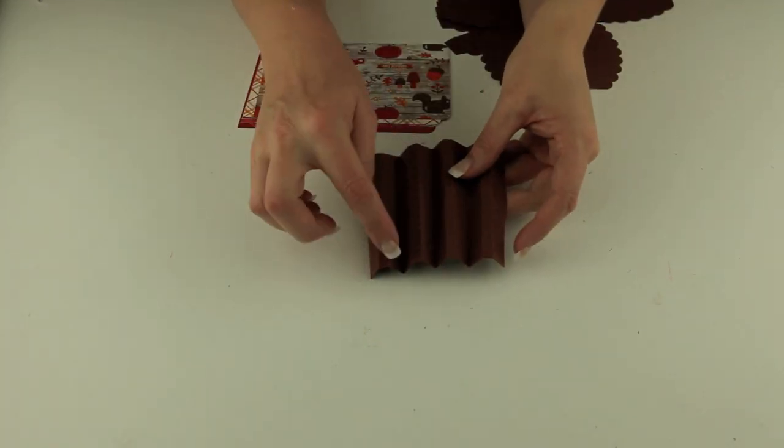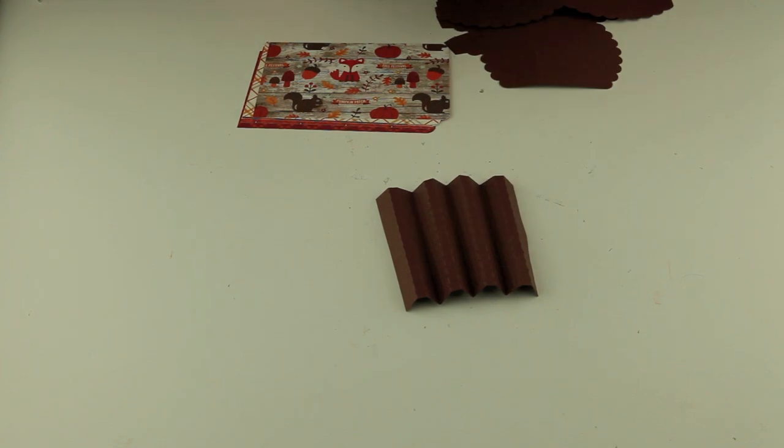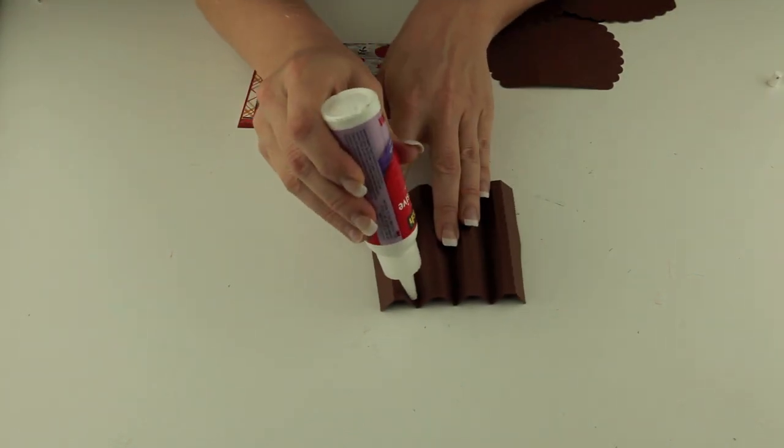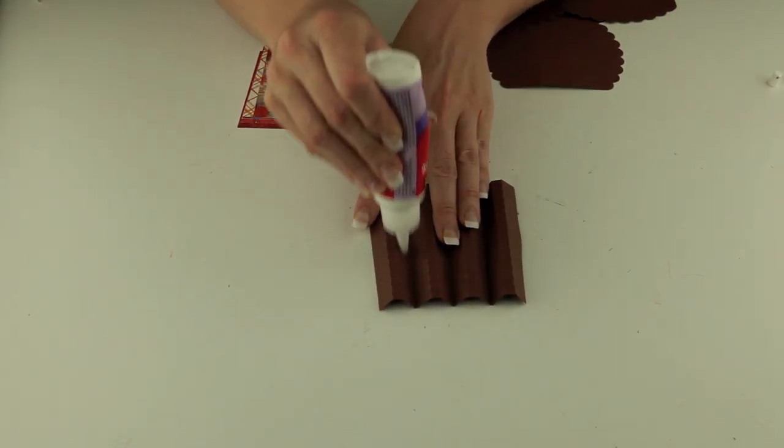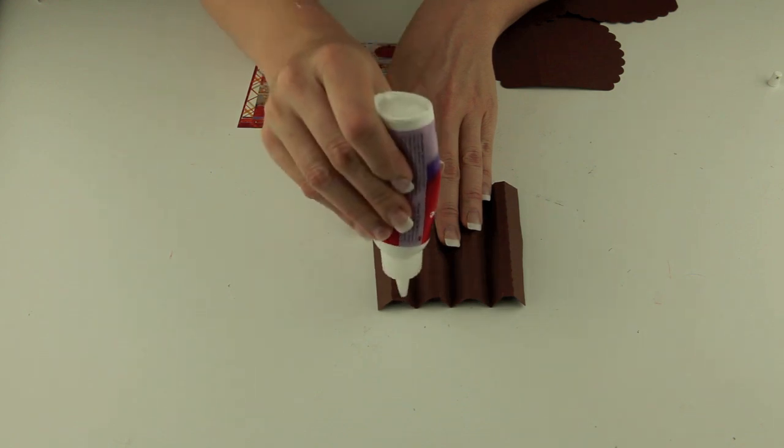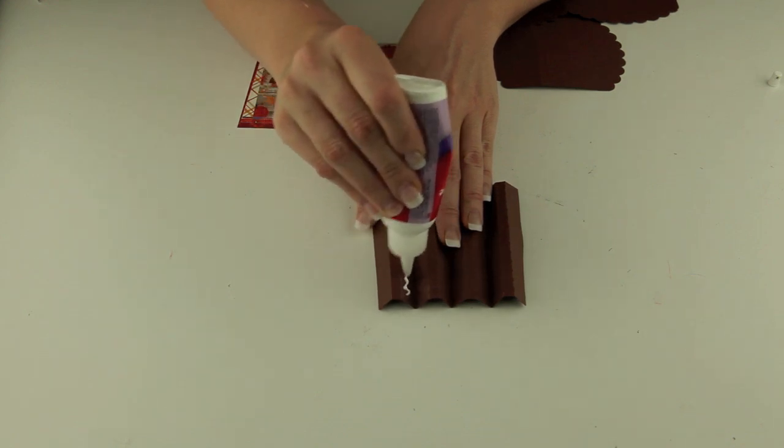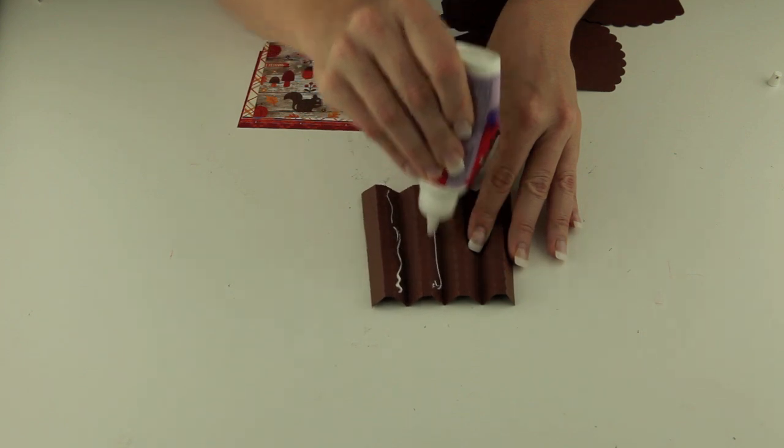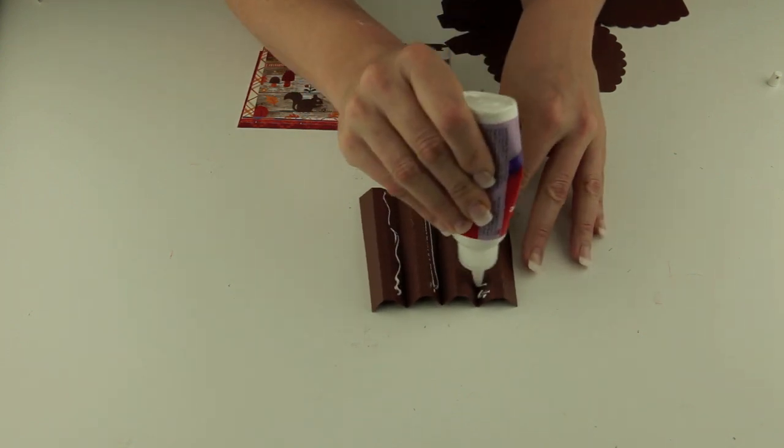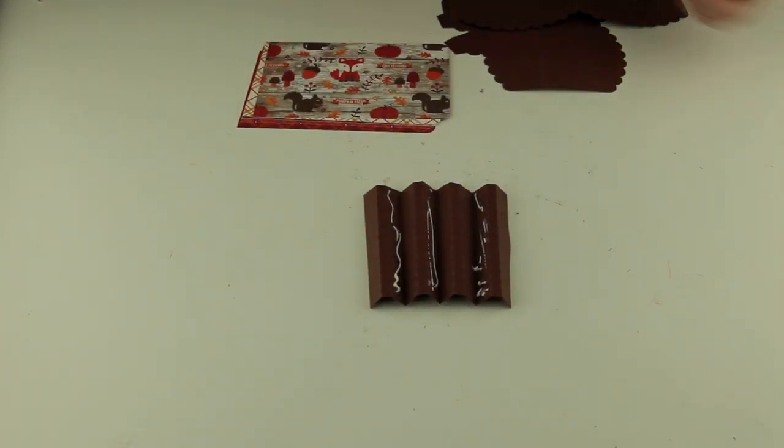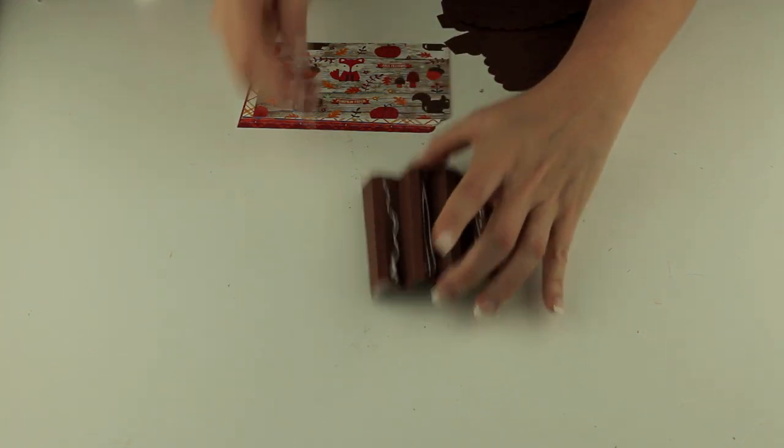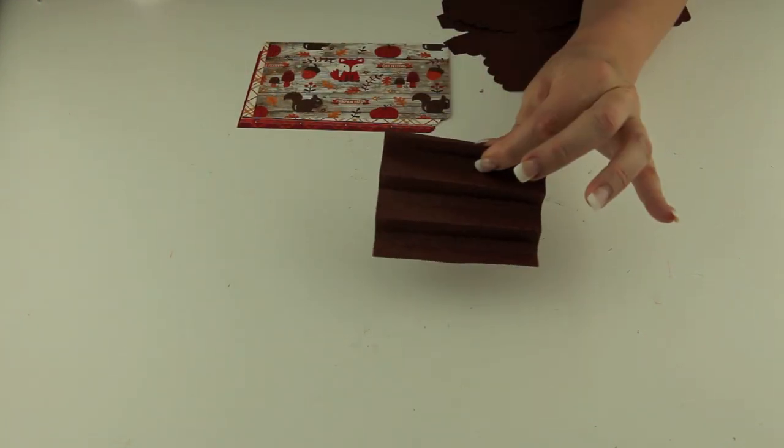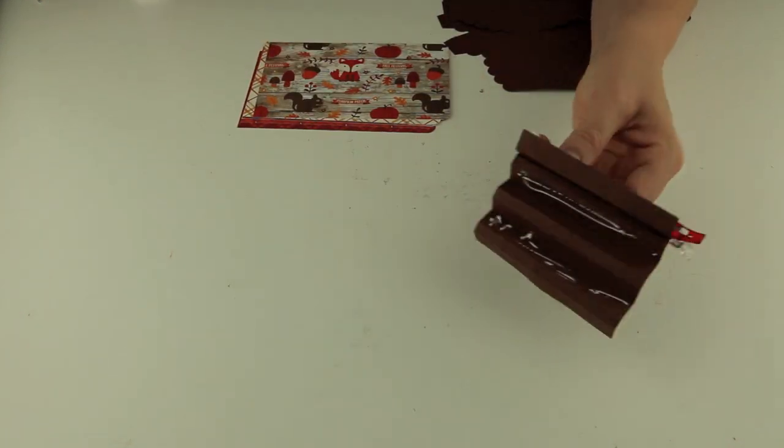Now we're ready to just glue our binding together. In these little half inch spaces we're just going to add some glue. Not too much. You don't want it to get too warped from the glue. I'm going to just pinch those together and I'm actually going to use a clip to hold them in place.